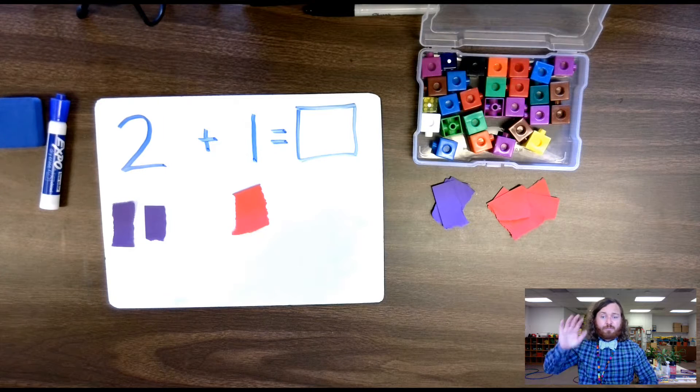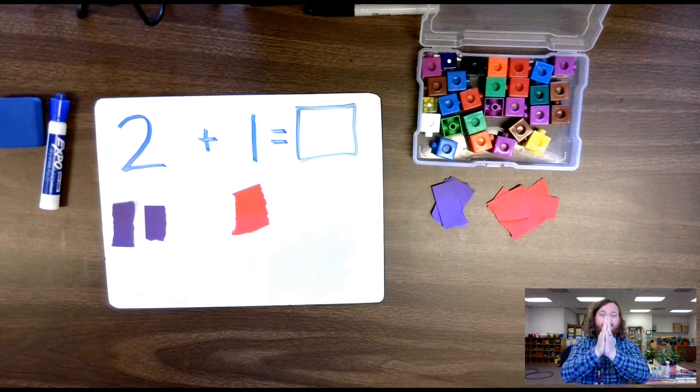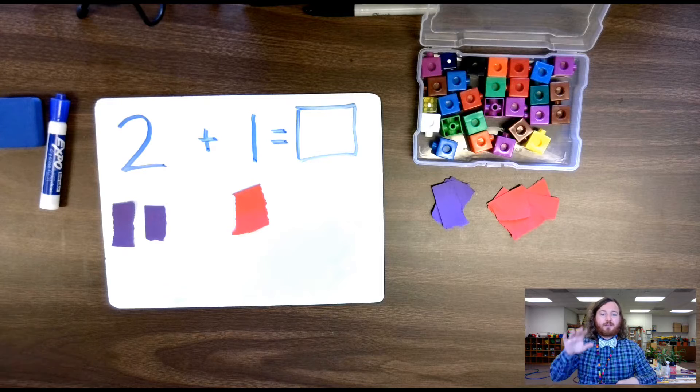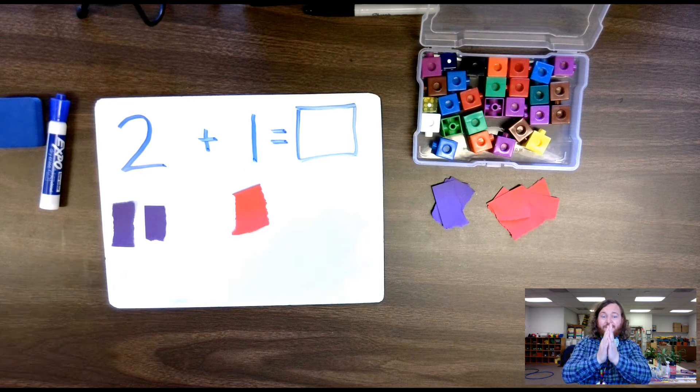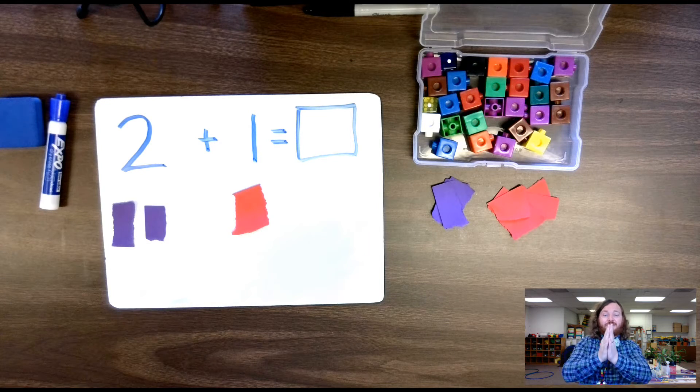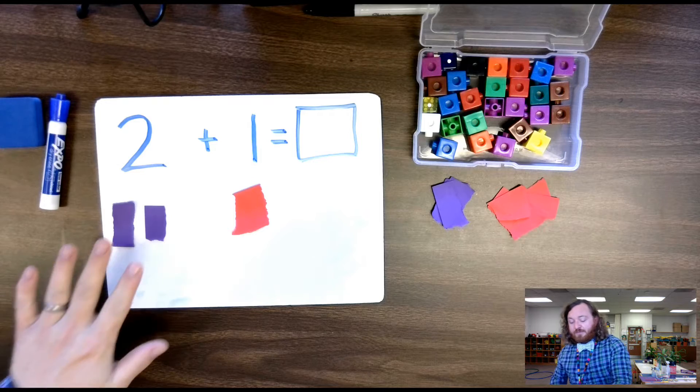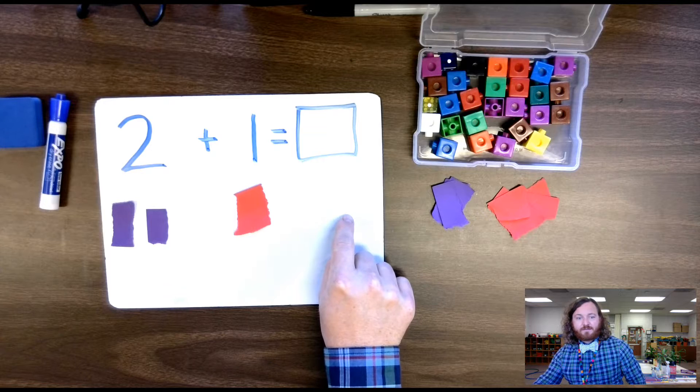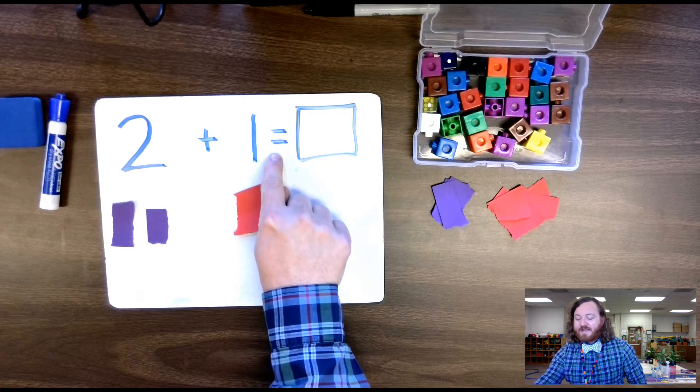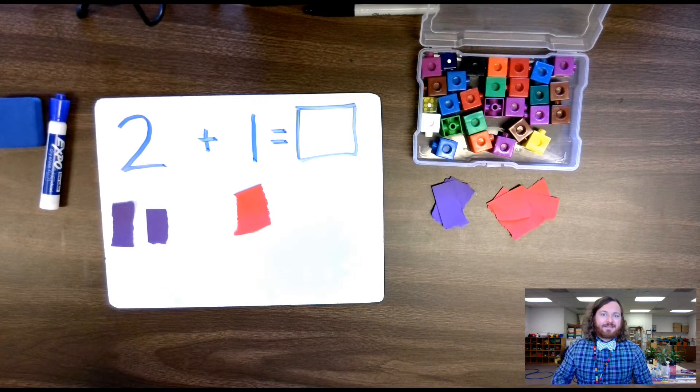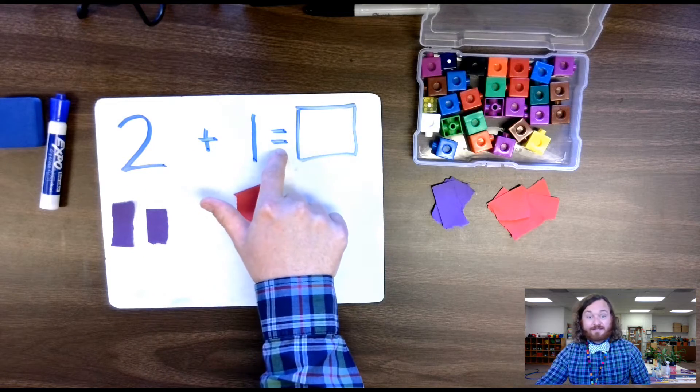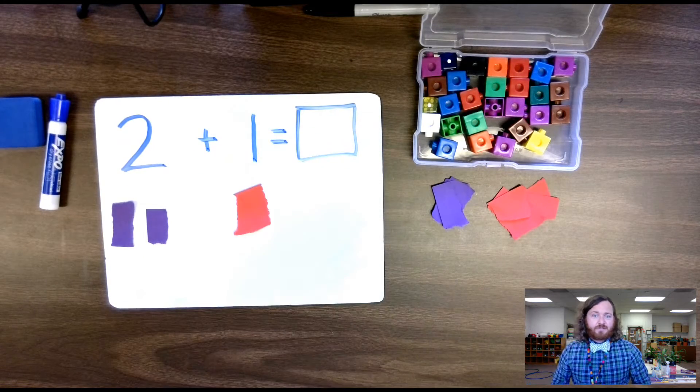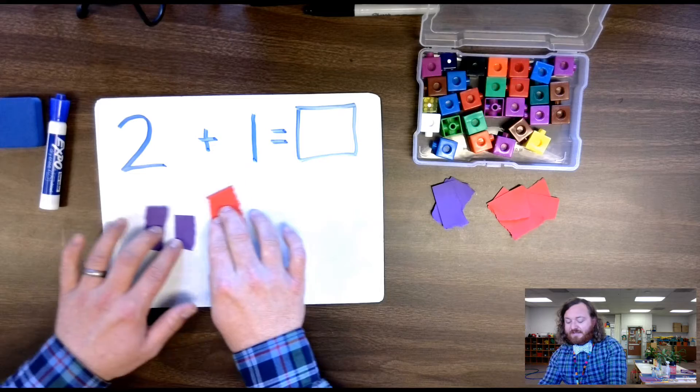Now, when we're adding, we're putting things together. Okay, you can say that with me. Put things together. Okay, so I'm going to need to put my two and my one together to see what the other side is going to be. The equal sign means same as. So that means two plus one is the same as whatever this number is.